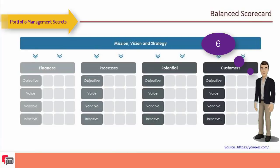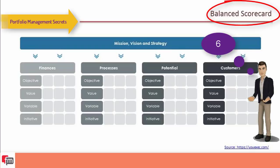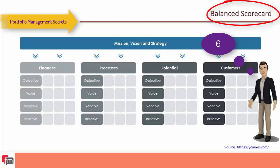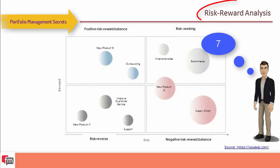The sixth tool is the balanced scorecard — a strategy performance management tool and semi-standard structured report that managers can use to track the execution of activities by staff within their control and to monitor the consequences arising from those actions.